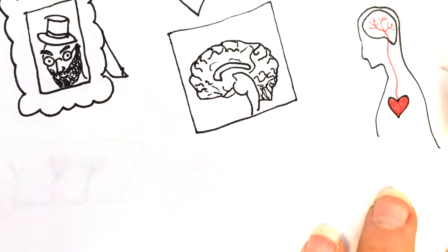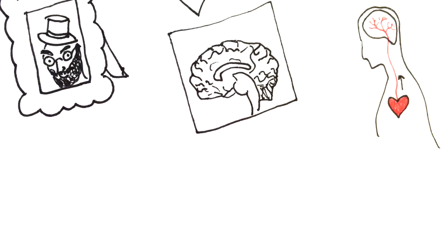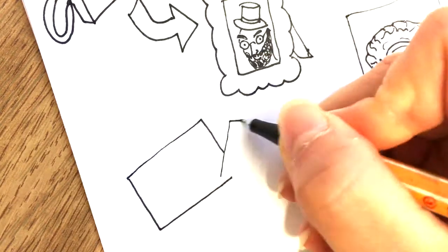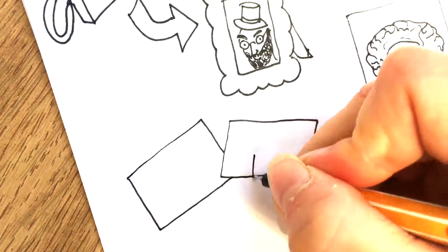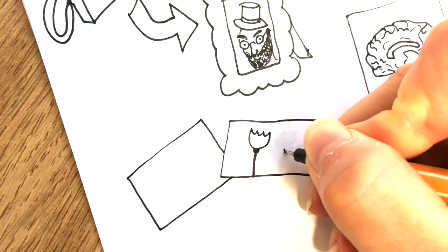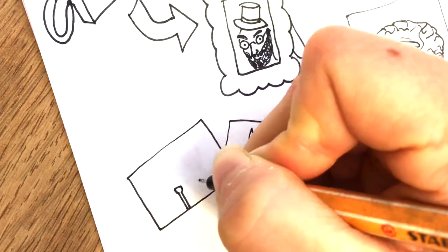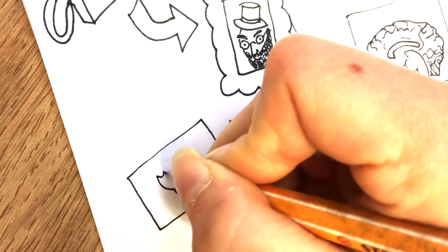Images that capture more information are generally considered better than images with less information. For example, a colour photo has more information in it than a black and white photo. You will know more about the flowers in your grandmother's garden if she can send you a colour picture than if she sends you a black and white version.